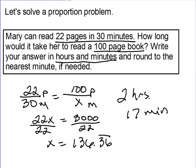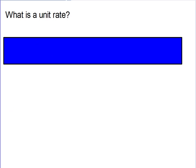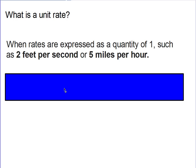This is kind of a review of solving proportions. And what we're going to do today is we're going to use that in order to find unit rate. Because I want to be able to determine which is the better buy. And in order for us to determine what's the better buy, I have to be able to have something to compare to, which is a unit rate. So what is a unit rate then? Well, a unit rate is a rate that expresses as, it's expressed as a quantity of one, such as two feet per second or five miles per hour. So when rates are expressed as a quantity of one, it is considered a unit rate.